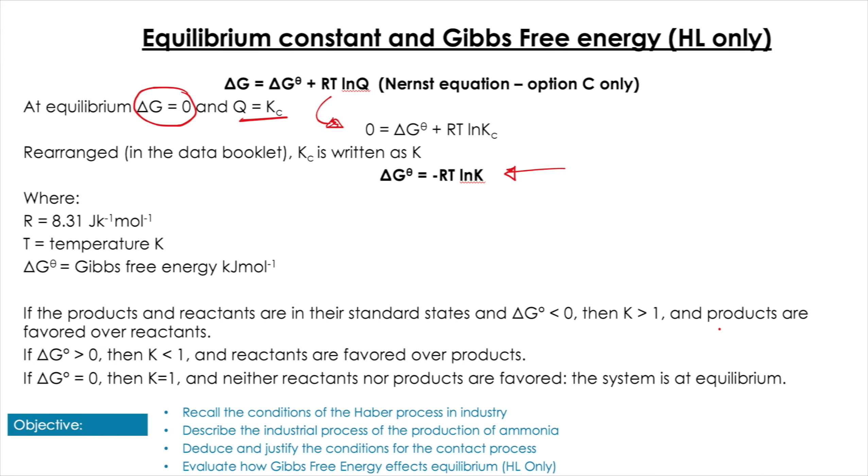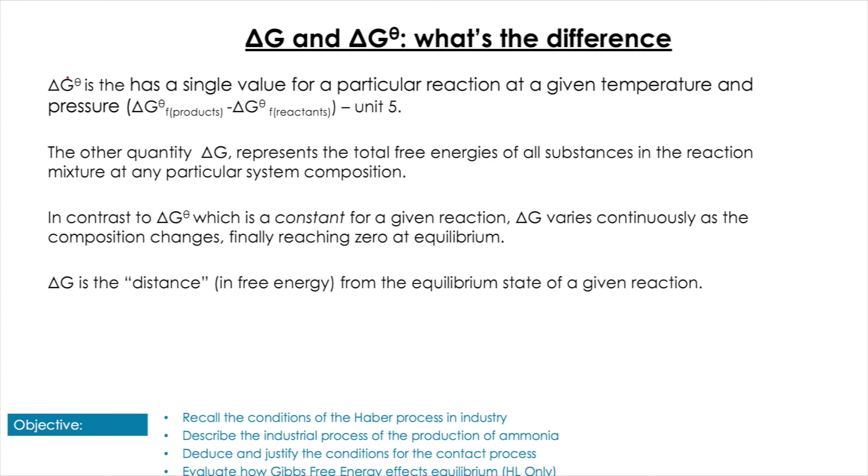And what do we mean when we say ΔG versus ΔG°? Well, ΔG° has a single value for a particular reaction at a given temperature and pressure, and we did a little bit of those calculations. The other quantity, ΔG, represents the total free energies of all the substances in the reaction mixture at any particular system composition.